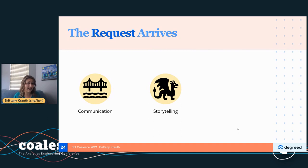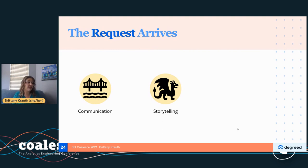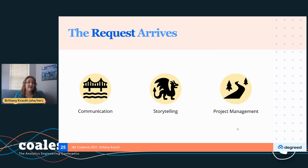Our next skill is storytelling — becoming a storyteller and knowing your audience. The kind of information a sales rep needs is probably different from what the chief revenue officer needs. Understanding how summarized or how deep you should go is really important.